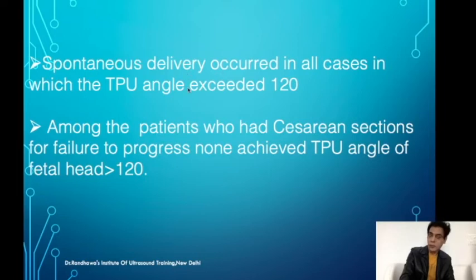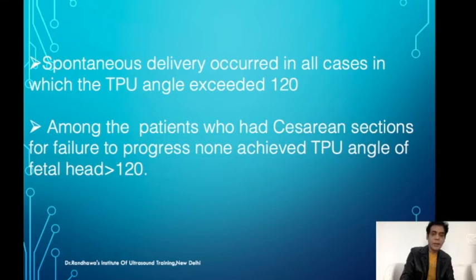Spontaneous delivery occurred in all cases where the angle was more than 120 degrees. In those cases where cesarean was required, the angle never reached greater than 120 degrees. Therefore, when you find that the angle is not going beyond 120 degrees and labour is not progressing, cesarean is necessary.